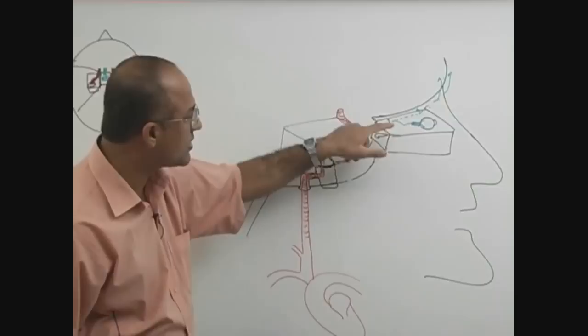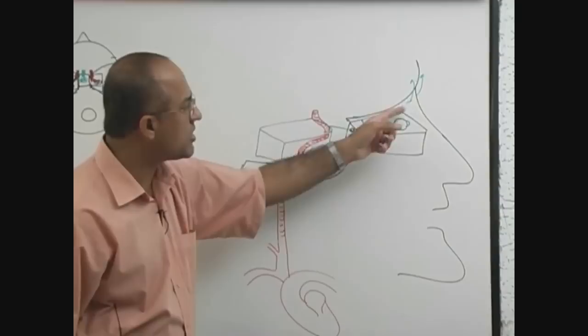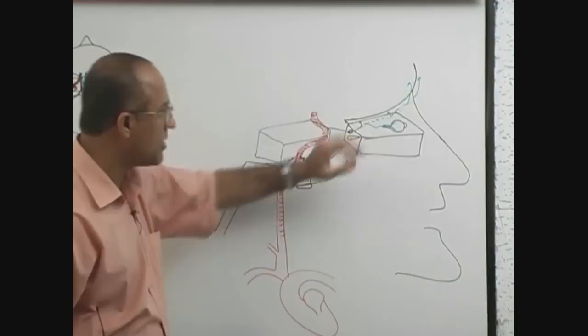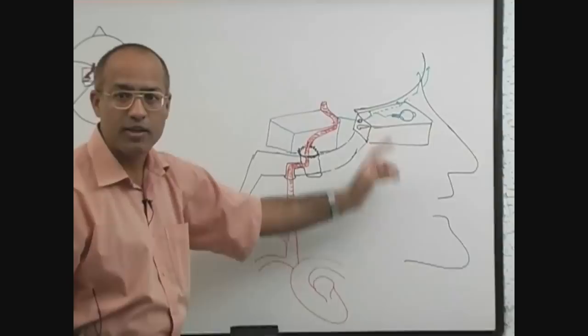The ophthalmic artery also gives posterior ethmoidal artery, anterior ethmoidal artery, nasociliary artery, supratrochlear artery, and supraorbital artery. You don't need to remember all of them, but you must remember there is the ophthalmic artery and its important branch, the central retinal artery.